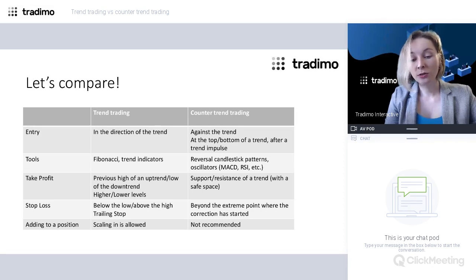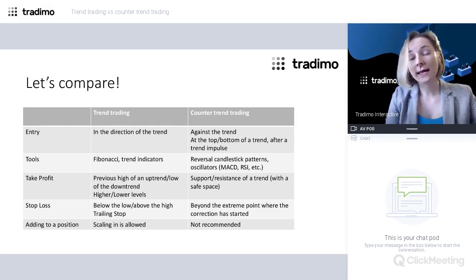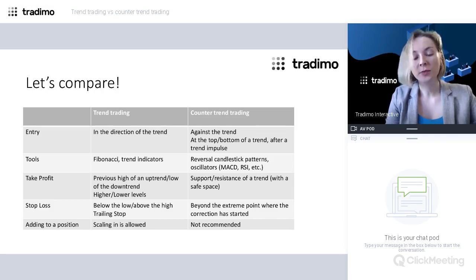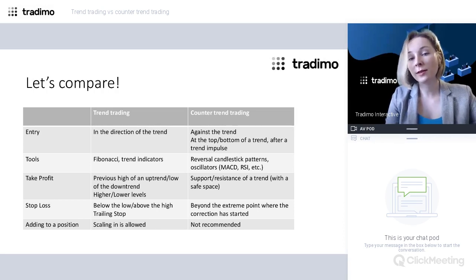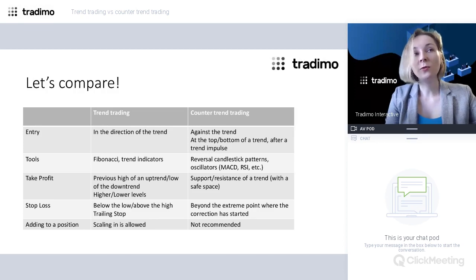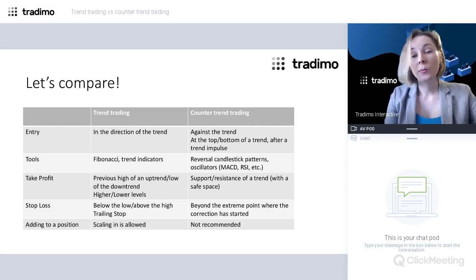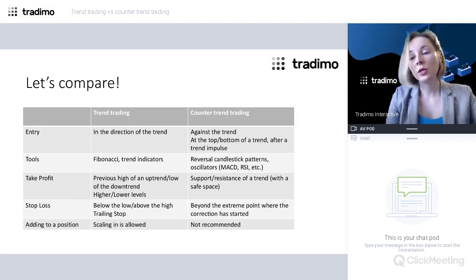For counter trend trading, the first natural take profit level is the support of a trend when trading against an uptrend, or the resistance when trading against a downtrend. However, much depends on trend strength. If the trend is strong, you may only target the middle of the channel, or meaningful levels close to the middle. A channel midline indicator can be used so you trade the market's return to that middle line.